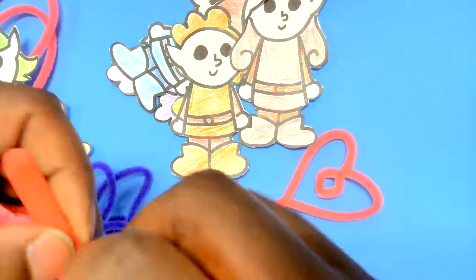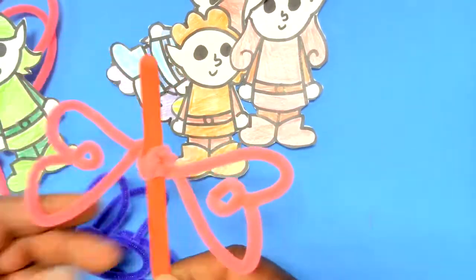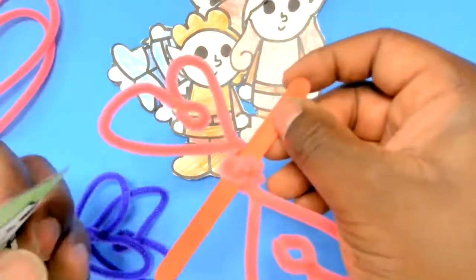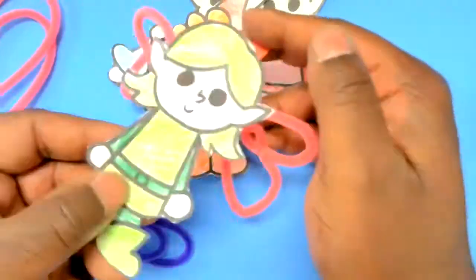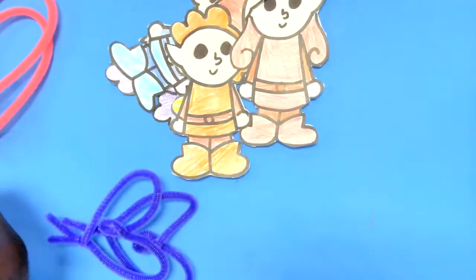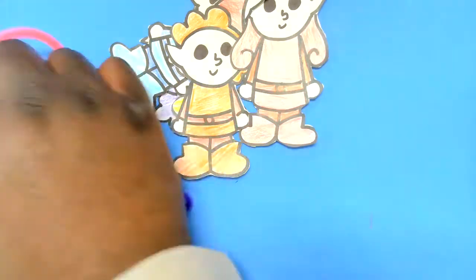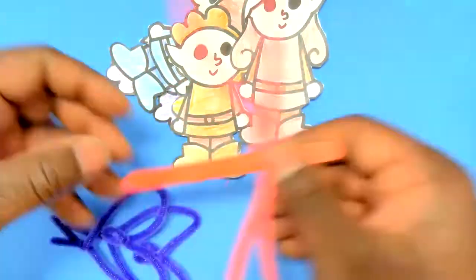So the next thing is to attach the fairy. There are two little slits in the paper. There should be one above and below their little belt. So what you're going to do is insert the popsicle stick into those slits.